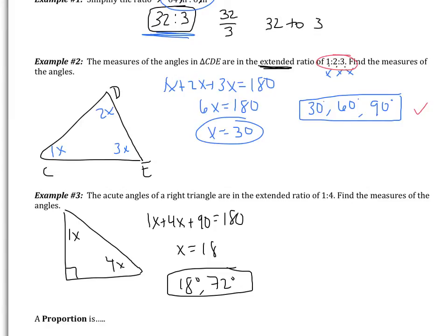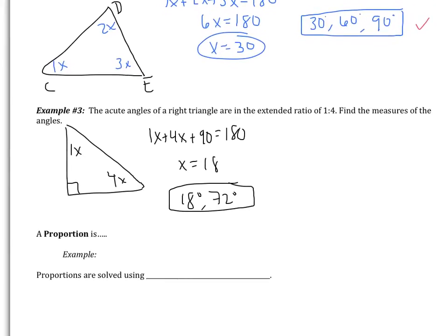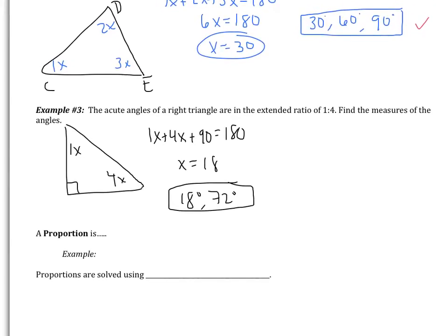That example ends our examples on ratios. Moving on, we're going to look at proportions. So we should probably talk about what is a proportion. A proportion is an equation that sets two ratios equal. So in this case, I have the ratio 1 over 4 is equal to the ratio 2 over 8. Generally, proportion shows ratios as fractions.